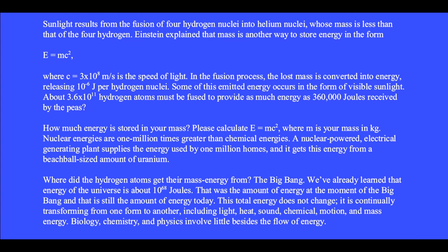Where did the hydrogen atoms get their mass energy from? The Big Bang. We've already learned that the energy of the universe is about 10 to the 68 joules. That was the amount of energy at the moment of the Big Bang, and that is still the amount of energy today. This total energy does not change — it is continually transforming from one form to another, including light, heat, sound, chemical, motion, and mass energy.